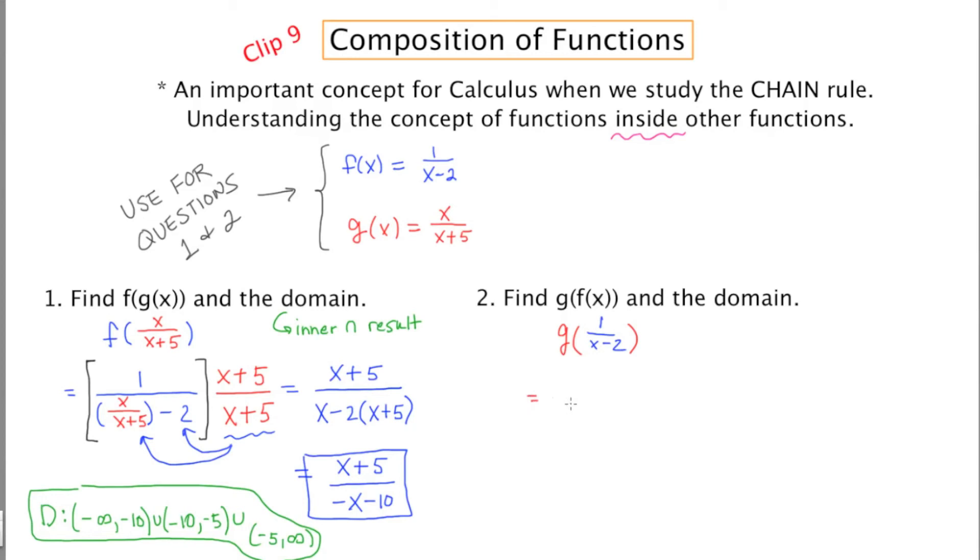Now this notation says go to the g function, and wherever you see an x, you're going to replace it with this new thing that's written in blue. So it's going to be blank over blank plus 5. Well, what goes in the blank? This new expression that's in the parentheses, which is going to be 1 over x minus 2. And as you may have guessed, we have another complex fraction, but this is really just another opportunity to practice.